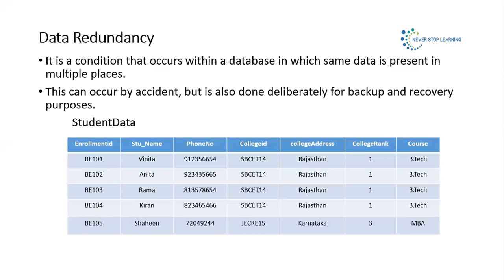As you can observe, the values of attributes like college ID, college address, college rank, and course are repeated. Students BE101 — Vinita, Anita, Rama, Kiran — are all in the same college, doing the same engineering course. So all these details are repeated, which can create a problem of data inconsistency, making information unreliable and meaningless if any discrepancy occurs.